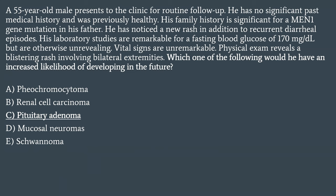The answer is C, pituitary adenoma. MEN1 is the three Ps: pituitary adenoma, parathyroid adenoma, and pancreatic endocrine tumors. Pheochromocytoma would be present in MEN2A or MEN2B. Renal cell carcinoma is not in any of these syndromes but can be seen in von Hippel-Lindau syndrome. Mucosal neuromas would point to MEN2B. Schwannomas can be found in neurofibromatosis type 2, but not in any of these syndromes.